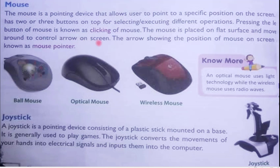The mouse is placed on a flat surface and moved around to control the arrow on screen. You have to keep your mouse on a flat surface for it to work properly — it sends movement signals from its underside. You can check your mouse at the bottom: there is a red color light that helps move your mouse pointer. The arrow showing the position of the mouse on screen is called the mouse pointer.